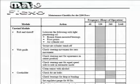So on their checklist for the 2200 press, the frequency is expressed in hours. So they have 40, they have 120, they have 360, and they have 1440 hours.